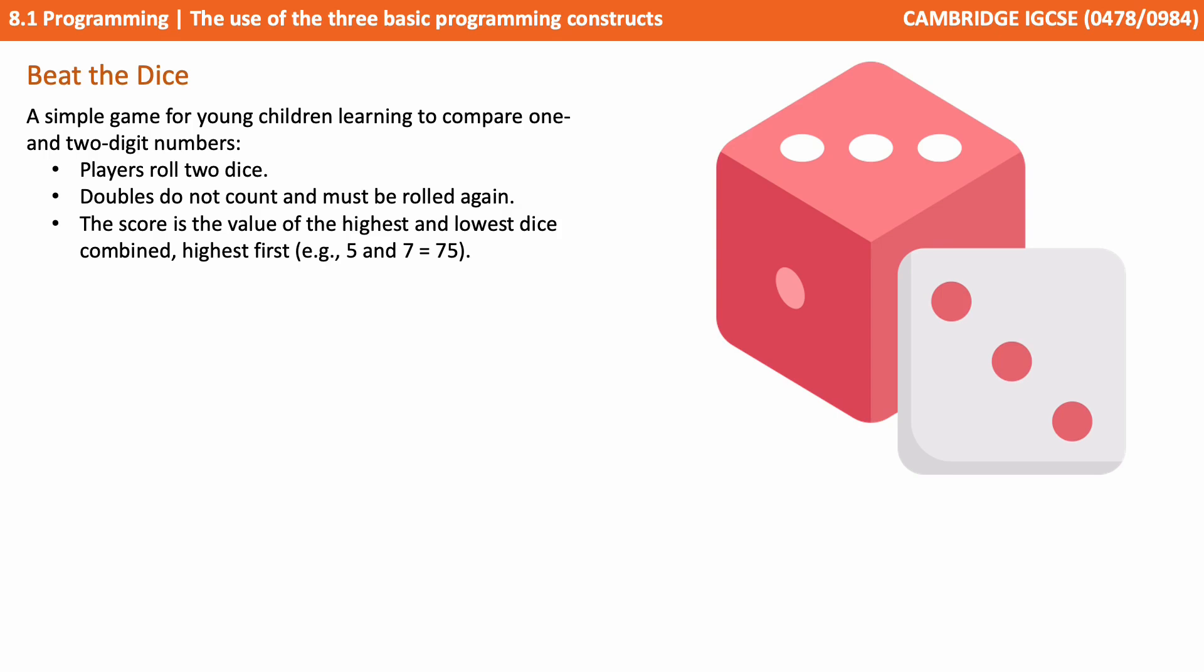If you're not aware, it's a simple game that compares one and two digit numbers. The player rolls two dice, doubles don't count unless rolled again, and the score is the value of the highest and lowest dice combined. So a roll of five and seven would give us seventy-five.